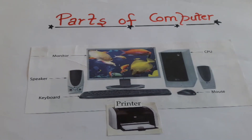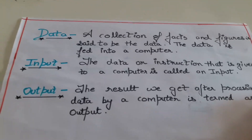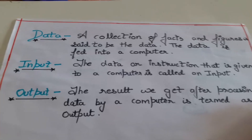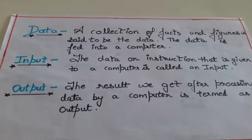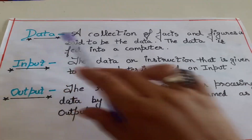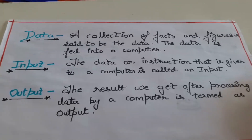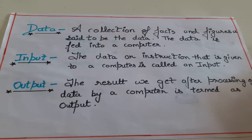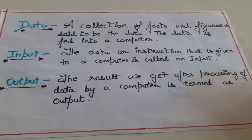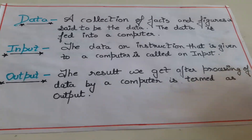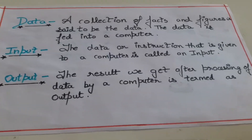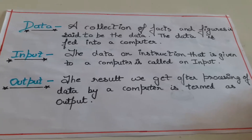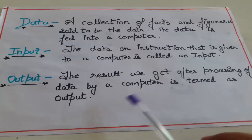I hope the parts of computer are clear. Now can you see children — data, input and output. Through different parts we can enter the data. Like through keyboard we enter the data. What is data? Data is a collection of facts. A figure is said to be data. Data is fed into a computer — data can be anything. Whatever data we enter through keyboard or mouse, that is saved in your computer. Now, input is the data and the instructions that are given to a computer. What is output? The result we get after the processing is output.